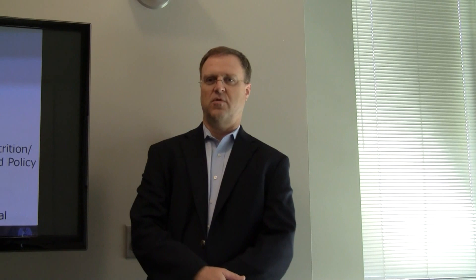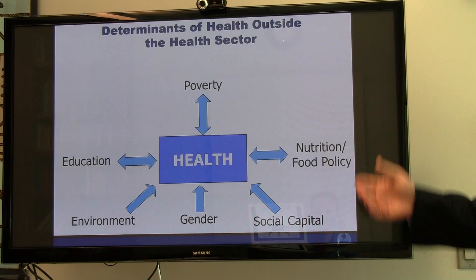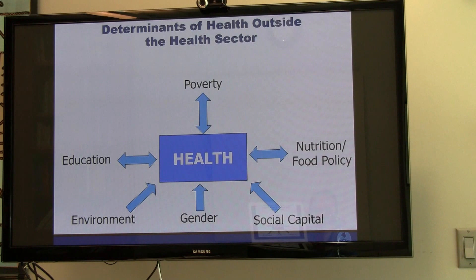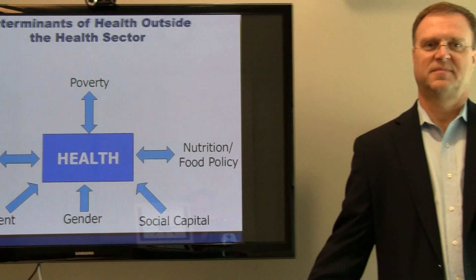The ways in which people are vulnerable or inequities show up are often related to the social determinants. When you look at the determinants of health, many are outside the health sector — they are related to socioeconomic poverty, food, nutrition, education, environment, gender, and social capital. All of these contribute to health and illness, and all are ways in which there can be inequalities and inequities in health.